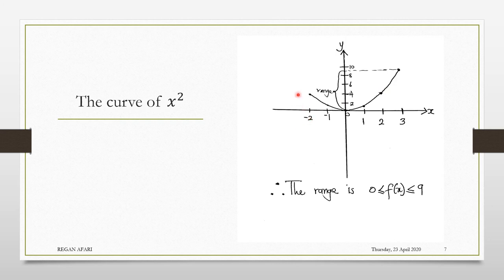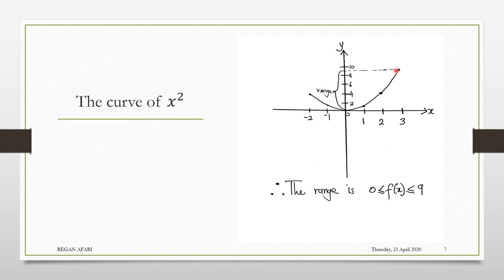If you are not conversant with curve sketching, then this is what you should do. Draw your x and y plane, then input each value. Remember, it's the curve of x squared, so every number is squared. Negative 2 gives 4, negative 1 gives 1, 0 gives 0, 1 gives 1, 2 squared gives 4, and 3 squared gives 9. Then use a smooth curve through all the points, and you are done.